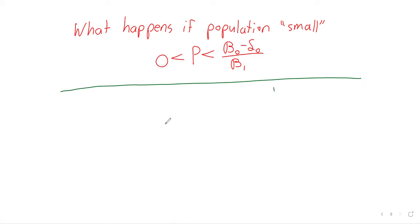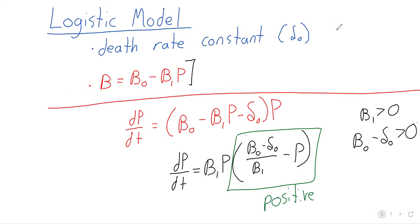Conversely, what happens if the animal population is large? And by large, I mean bigger than the carrying capacity. So again, going back to this differential equation, if the population is large, this difference is now negative. And we've got a positive constant B1 times a positive population times a negative number. So the derivative is negative. A negative rate of change tells you something's decreasing.